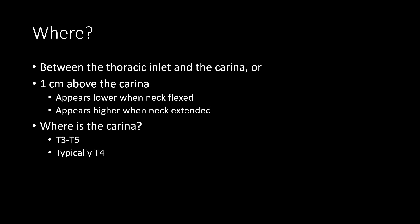So where does the endotracheal tube need to terminate? Generally, it needs to terminate between the thoracic inlet and the carina — so below the vocal cords, but above the bifurcation of the trachea into the bronchi. Ideally, it would be positioned approximately one centimeter above the carina, and this location will be slightly lower when the neck is flexed, and slightly higher when the neck is extended.